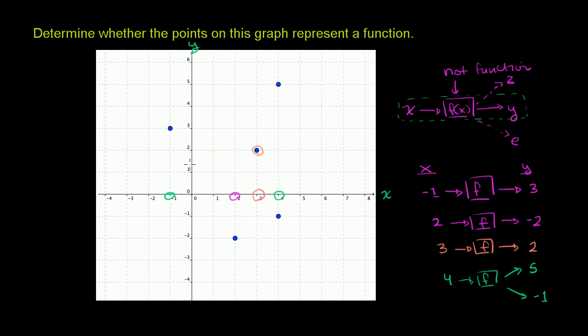So this thing right over here is actually a relation. You can have one member of the domain being related to multiple members of the range, but if you do have that, then you're not dealing with a function. So once again, because of this, this is not a function. It's not clear that when you input 4 into it, should you output 5 or should you output negative 1?